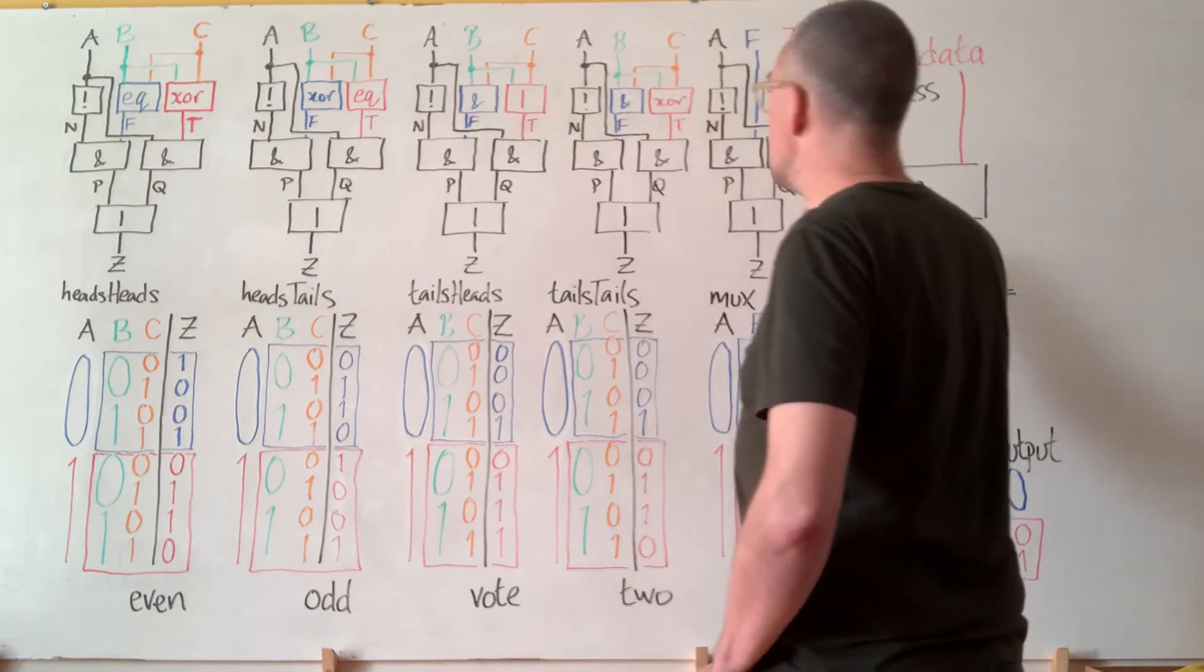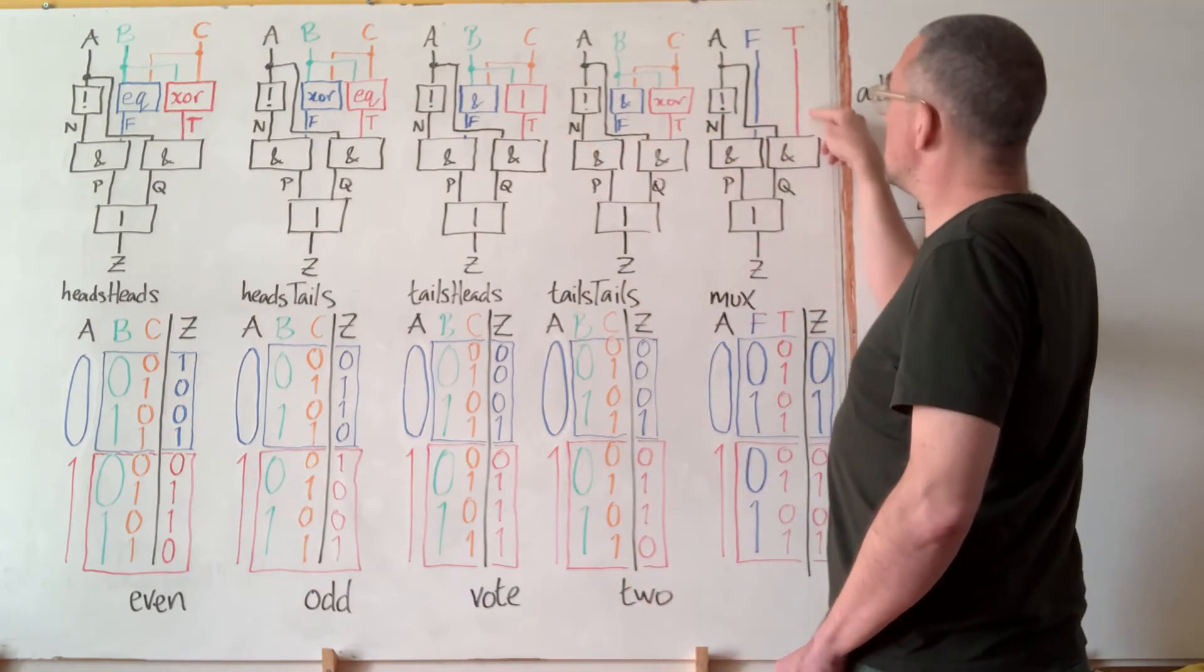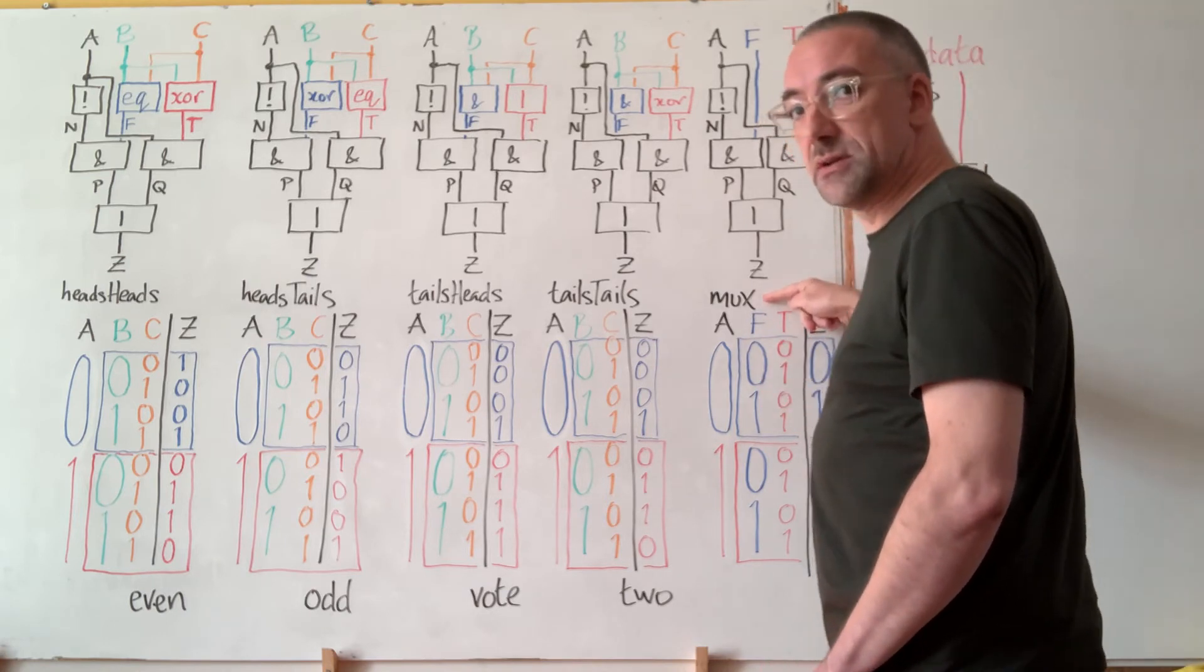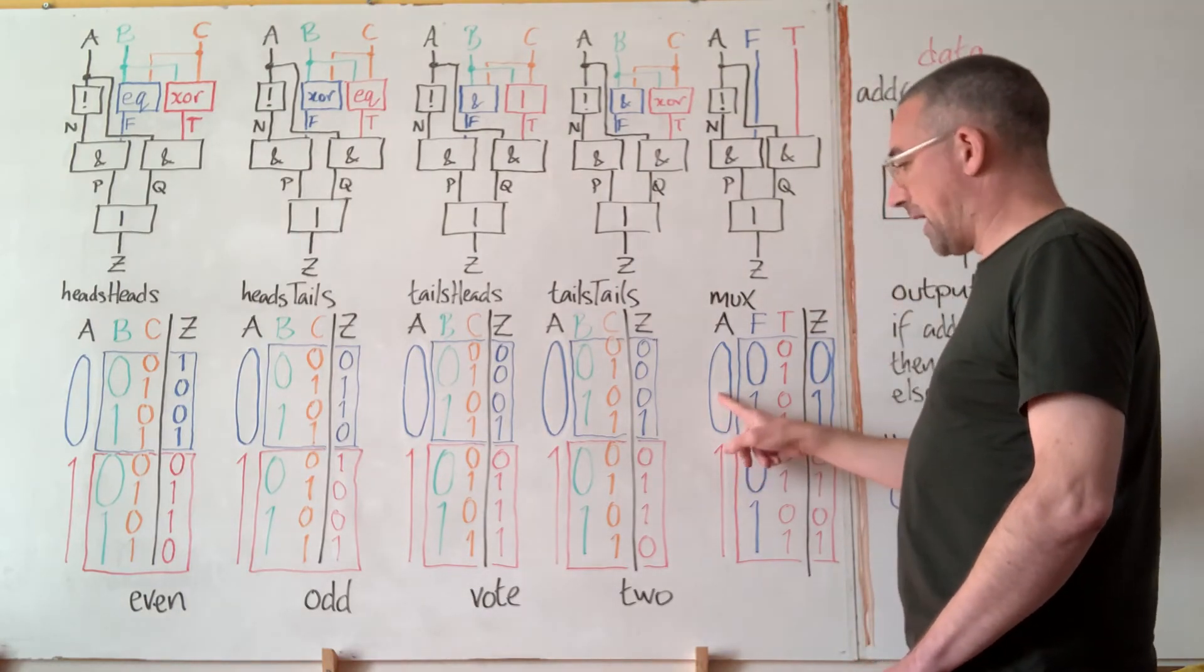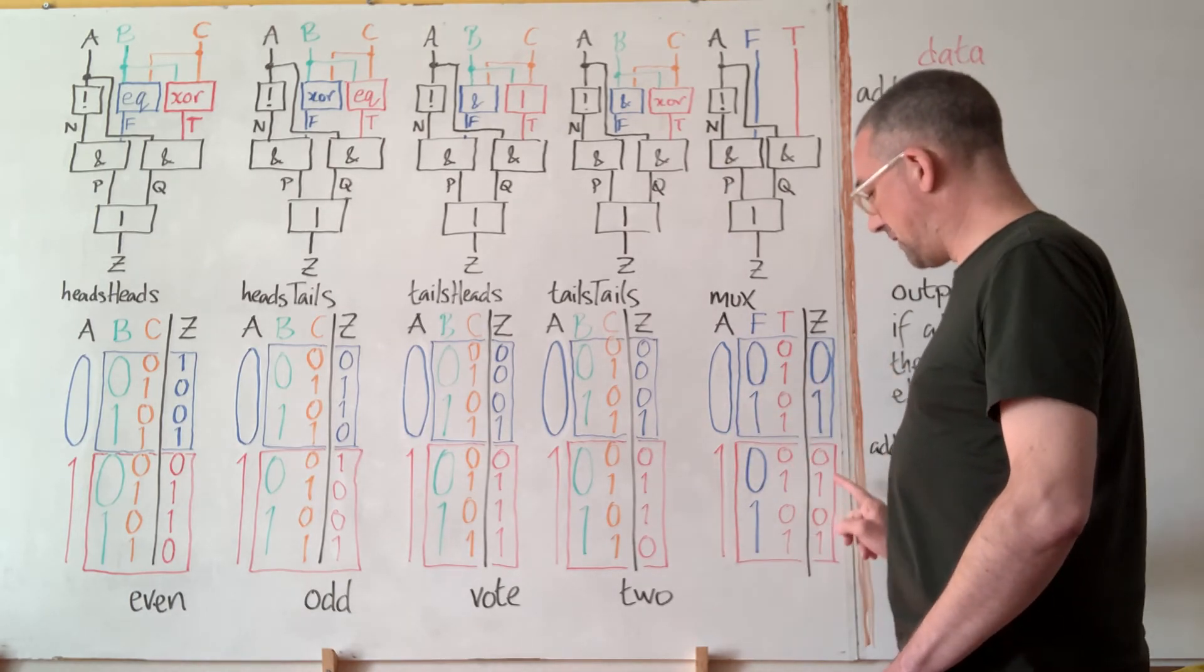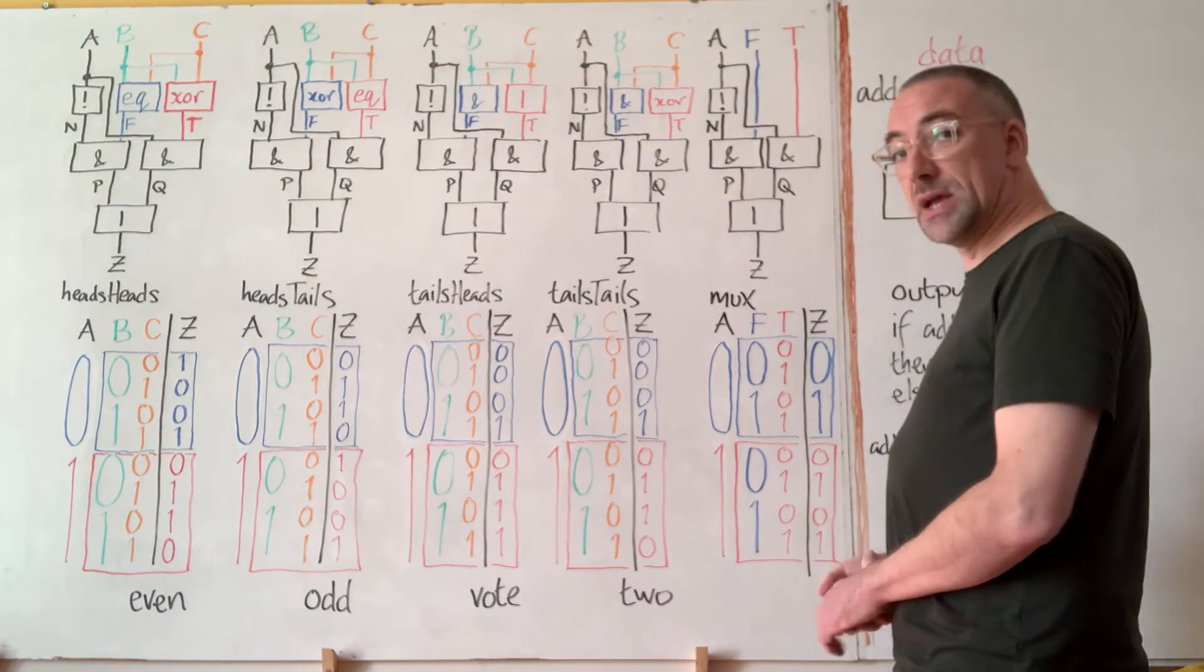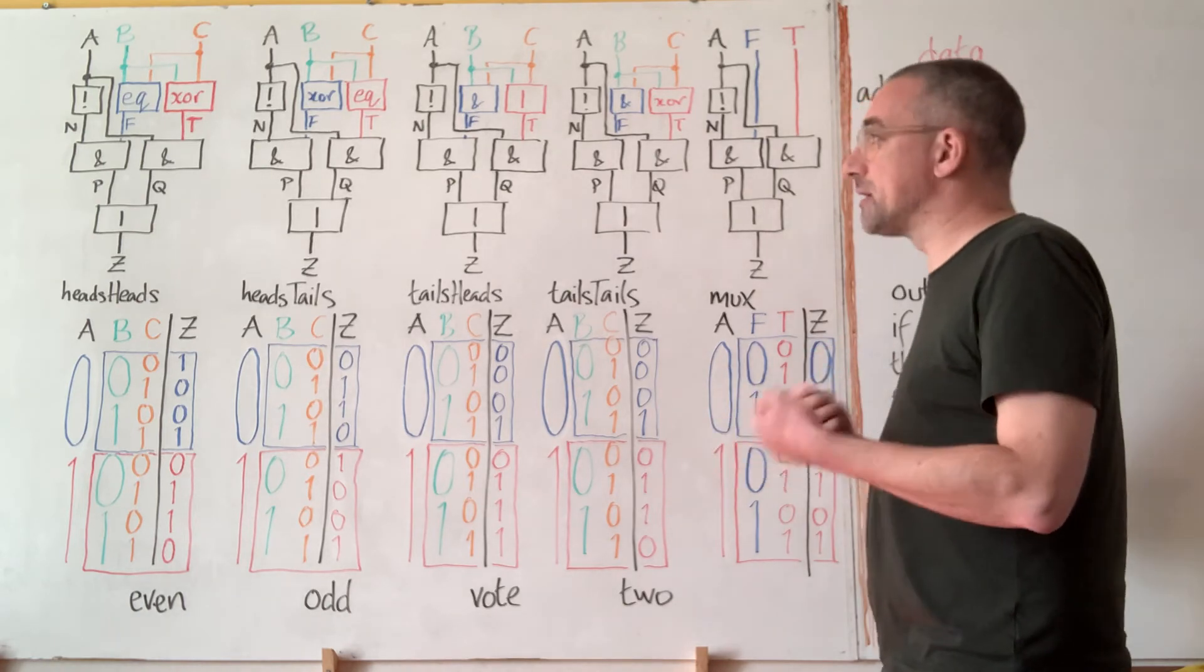So that's to say we extend the F and T wires up to the inputs. And that gives us this MUX whose truth table has the property that when A is 0, the output is the same as F. When A is 1, the output is the same as T. So all we're doing is switching between which of two signals we would like to receive.